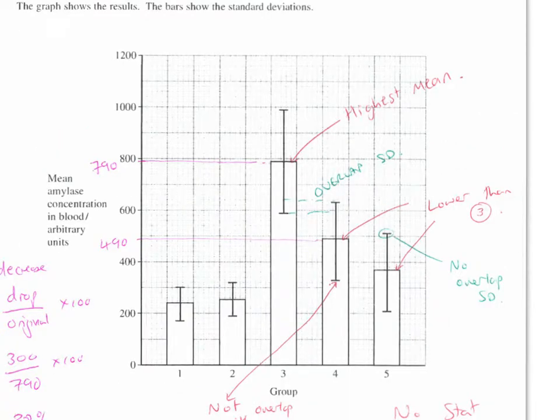Looking at the graph, what can we gather from the graph? We can clearly see that group three has got the highest mean. It's also got the largest spread around the mean, so the standard deviation bars are also the largest. It's got the largest spread around the mean and it's the highest mean. That's actually the answer to question four.